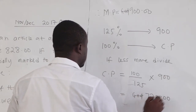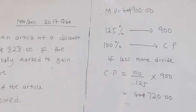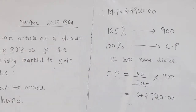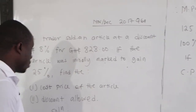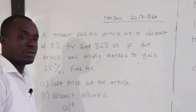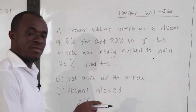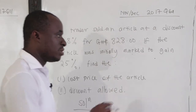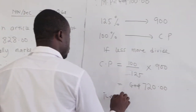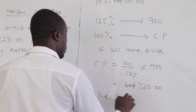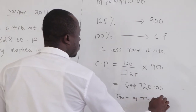So the first part asks us to find the cost of the article. The cost of the article is 720 cedis. So we can conclude: the cost of the article is 720 cedis.